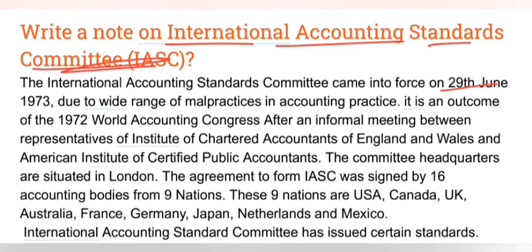The agreement to form IASC was signed by 16 accounting bodies from 9 nations. These 9 nations are USA, Canada, UK, Australia, France, Germany, Japan, Netherlands, and Mexico. The International Accounting Standards Committee has issued certain standards.